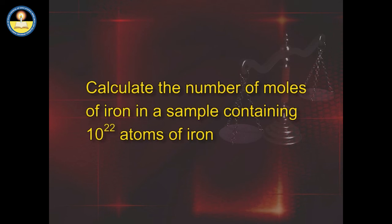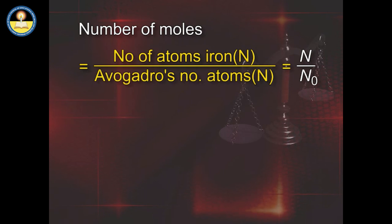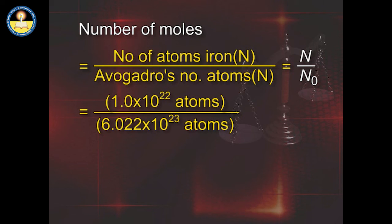Problem: Calculate the number of moles of iron in a sample containing 10²² atoms of iron. Solution: Number of moles equals number of atoms of iron divided by Avogadro's number, which equals (1 × 10²²) ÷ (6.022 × 10²³), that is 0.016 mol.